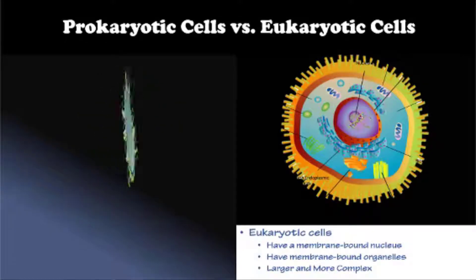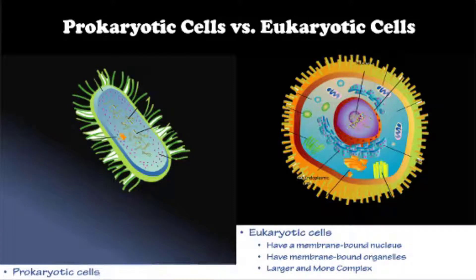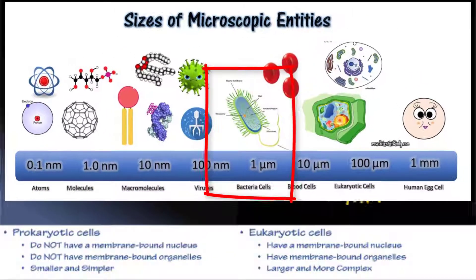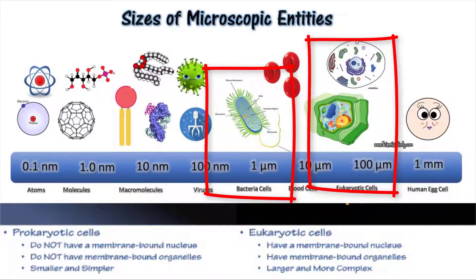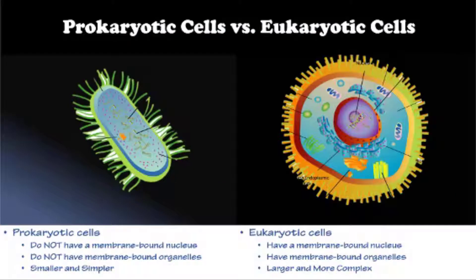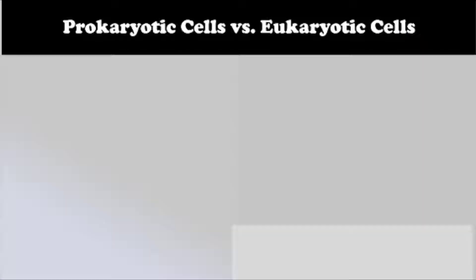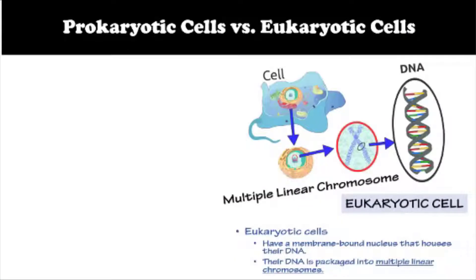Prokaryotic cells are smaller and simpler than eukaryotic cells. Prokaryotic cells do not have a membrane-bound nucleus and do not have membrane-bound organelles.